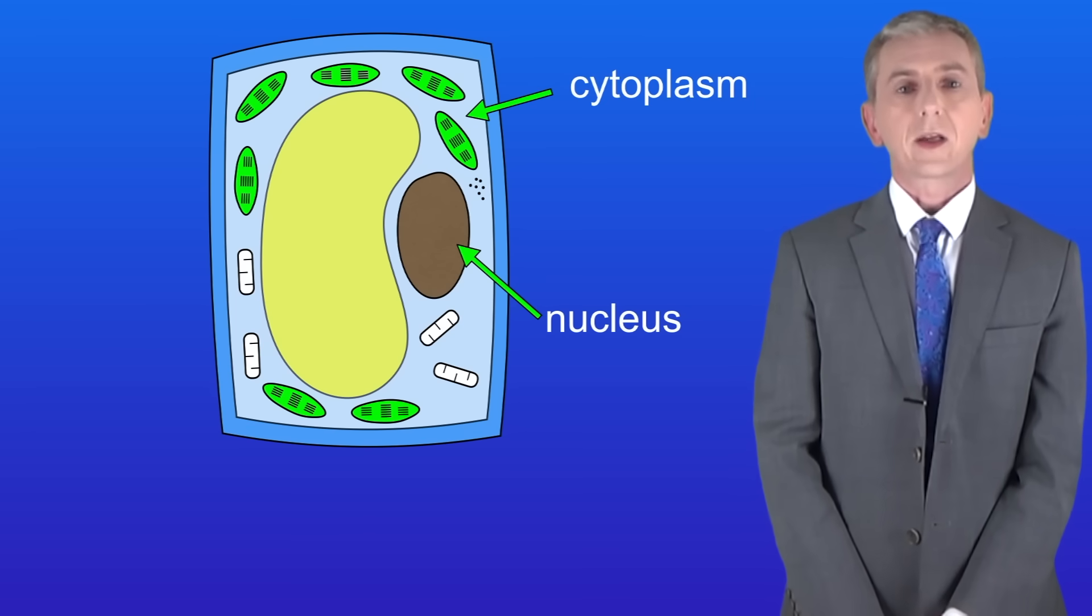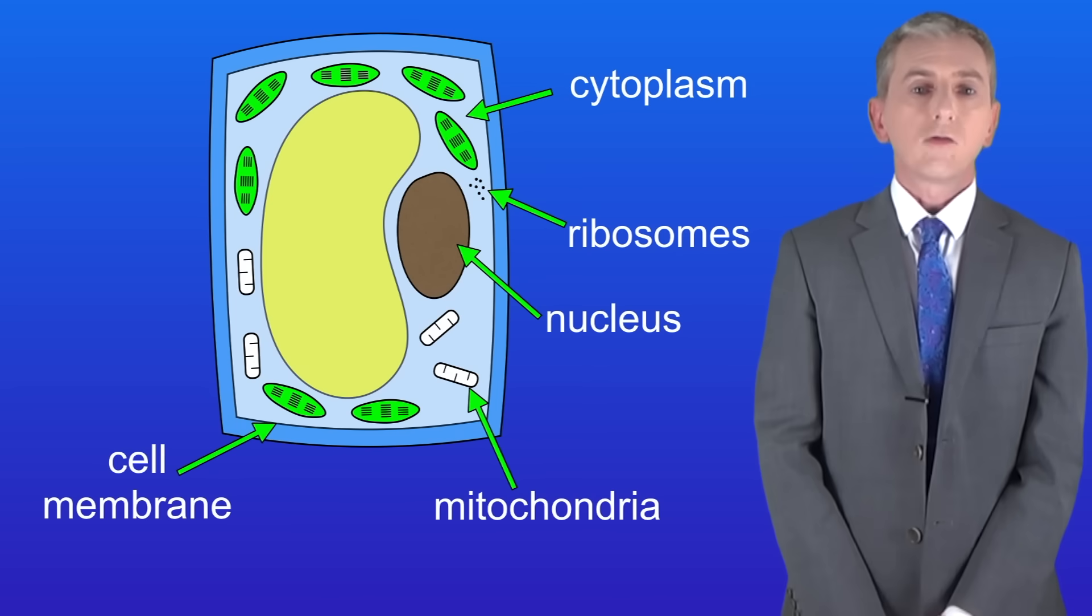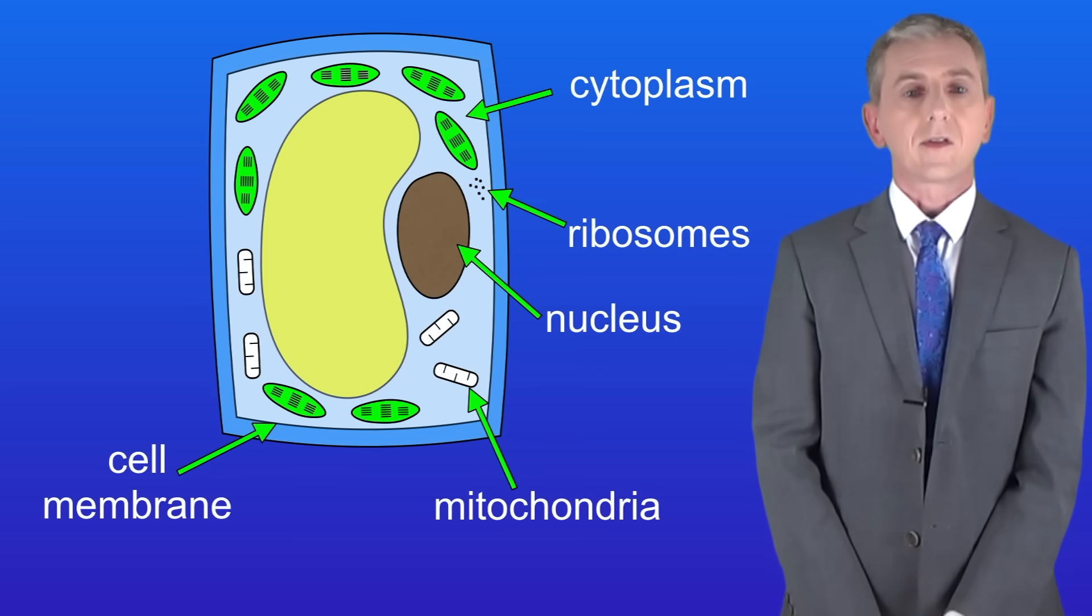We also have a cytoplasm where chemical reactions take place and a cell membrane which controls which molecules enter and leave the cell. Finally we've got mitochondria which carry out aerobic respiration and ribosomes which are the site of protein synthesis.